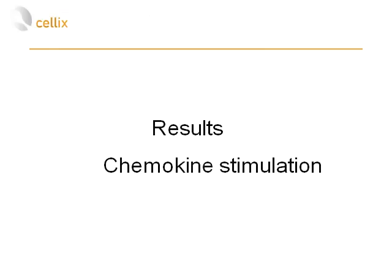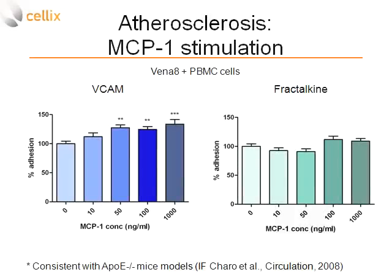We also looked at the stimulation of monocytes with chemokines, specifically monocyte chemoattractant protein-1 (MCP-1), in conjunction with both VCAM-1 coated and fractalkine coated biochips. As shown in the left-hand graph, treatment of PBMCs with MCP-1 tends to increase adhesion to VCAM-1 but does not do so in the case of fractalkine. This is consistent with findings in animal models, particularly mouse models, where the effects of MCP-1 and fractalkine are found to be completely independent.